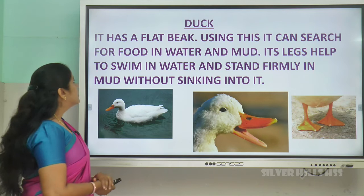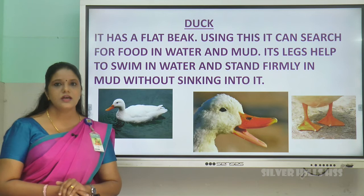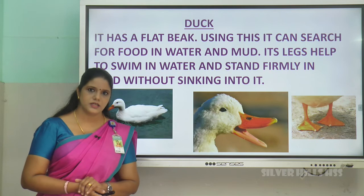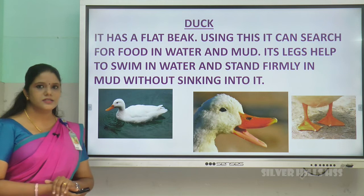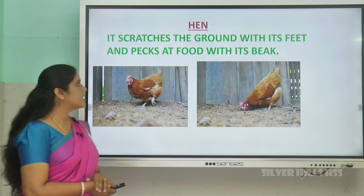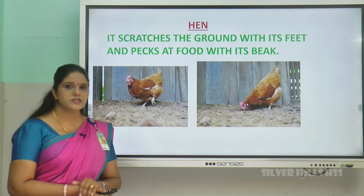Next comes the duck. How does a duck catch its prey? It has a flat beak; using its flat beak, it searches for food in mud and in water. It has web-like feet which help it to swim in water and also stand firmly in mud without sinking. The hen scratches the ground with its feet and pecks the food with its beak — this is how the hen catches its prey.